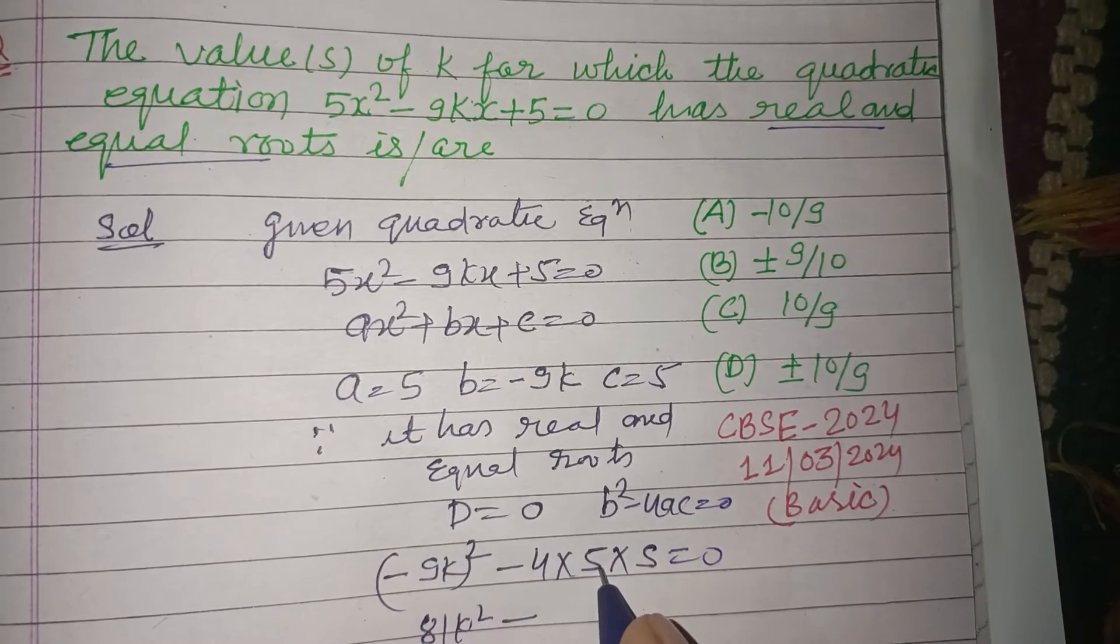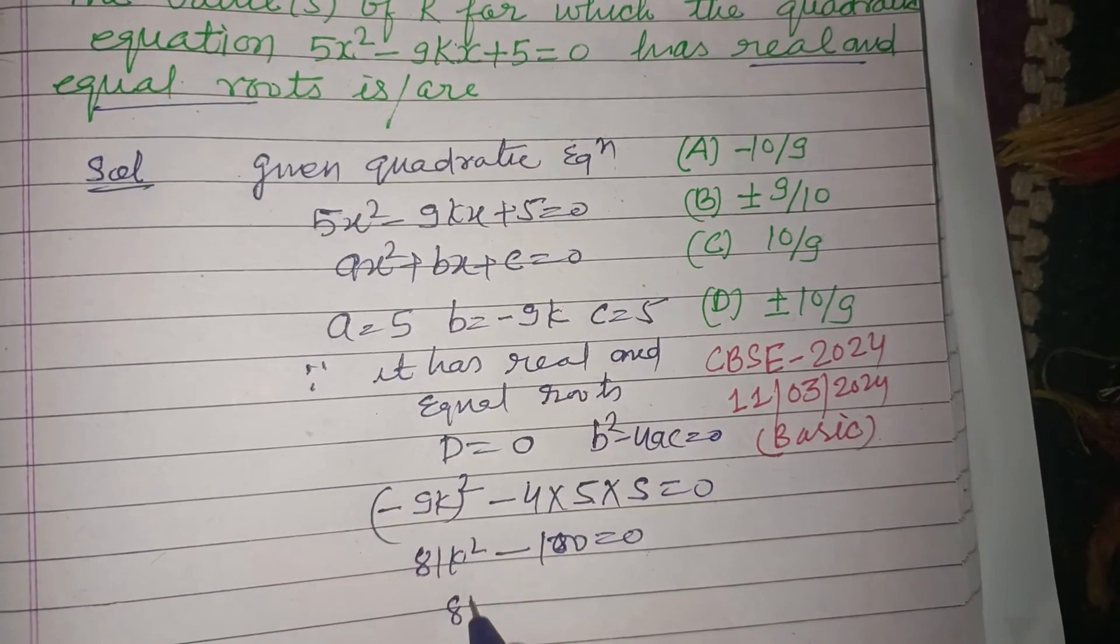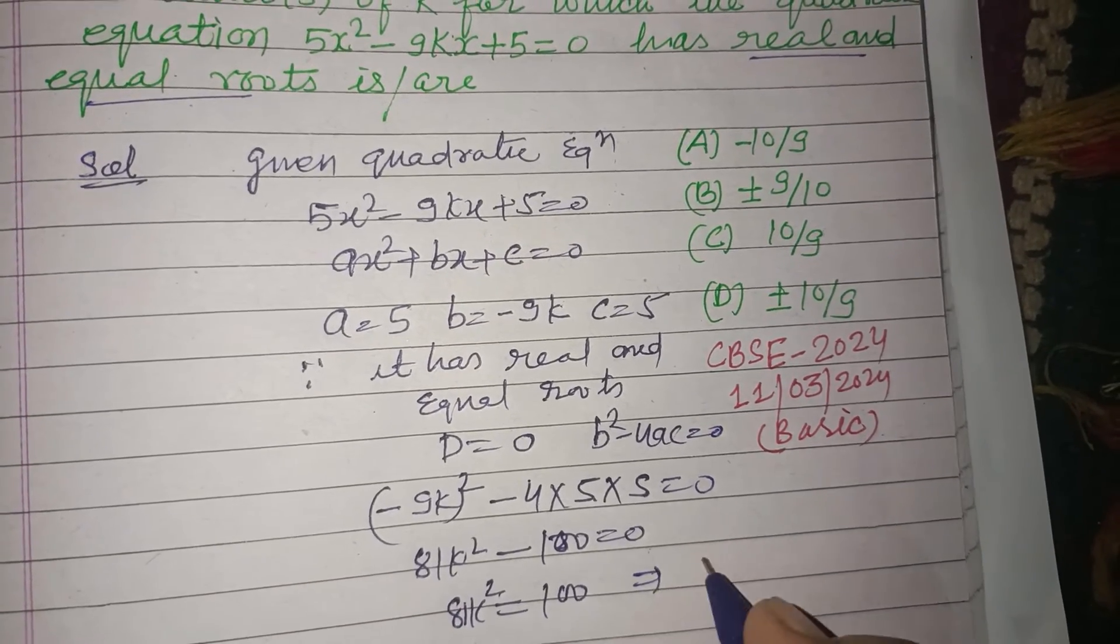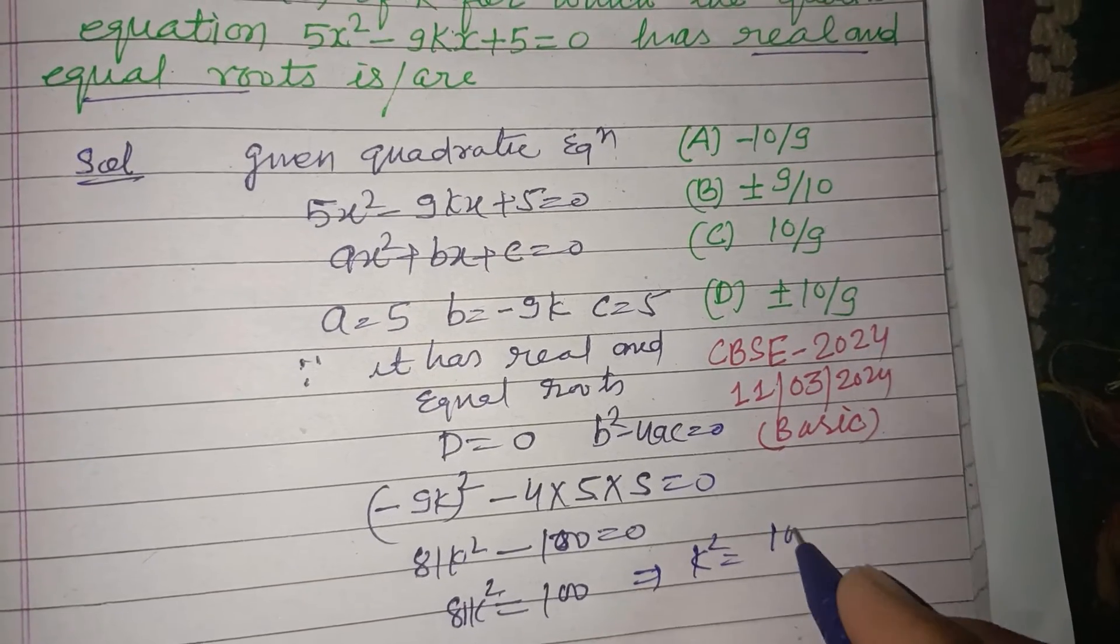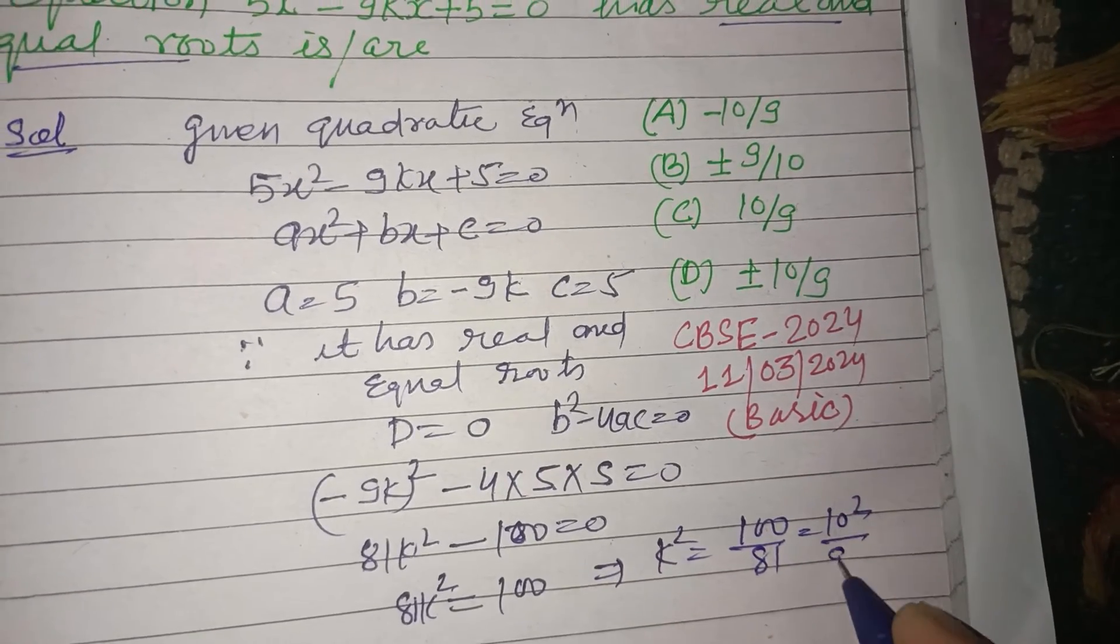So 81k² = 100. It means k² = 100/81. This is the whole square of 10 and this is the whole square of 9.